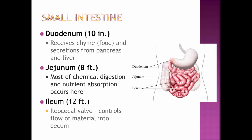The second part is the jejunum, about eight feet long, where a lot of the chemical digestion and nutrient absorption takes place. The third part is the ileum, the longest part. It does some absorption and water absorption, and lots of bacteria live there. It ends at the ileocecal valve, a sphincter valve that connects the small intestine with the large intestine, controlling movement of food from the ileum into the cecum.